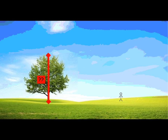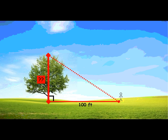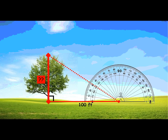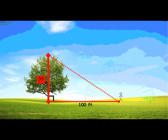We're going to measure this tree without actually climbing it. First, our stick figure friend measured how far away from the bottom of the tree they were — 100 feet in this case. The height of the tree and the distance away form a right angle, making it a right triangle. Our stick figure has to sight the line to the top of the tree. They can't measure that line directly, but they can use a protractor or angle-measuring tool to measure this angle — and they get 31 degrees. So we can use just this information to figure out how tall the tree is.